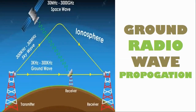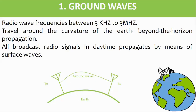Ground wave propagation is a mode of propagation that occurs when transmitting waves travel along the earth's surface and are received at the receiving antenna. The range of ground wave propagation depends on the frequency of the transmitted wave, the power of the transmitter, and the properties of the earth's surface and atmosphere.